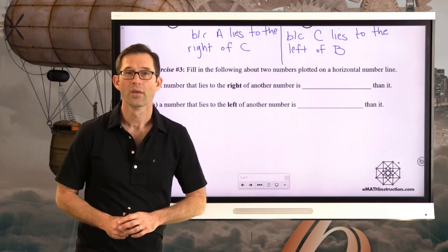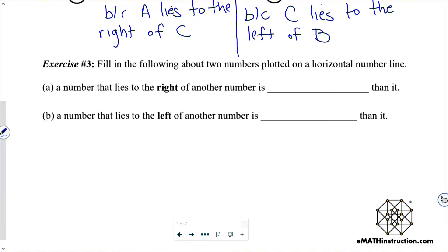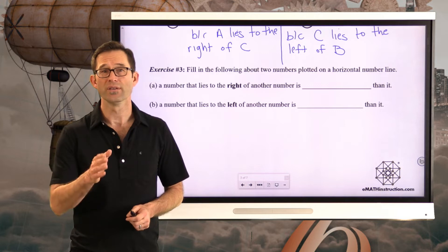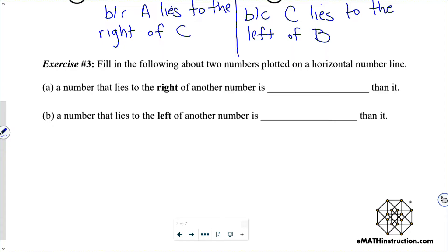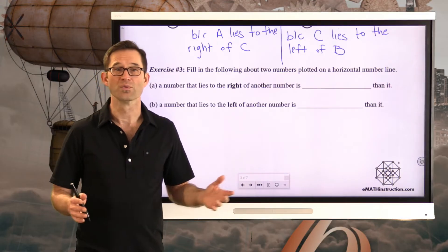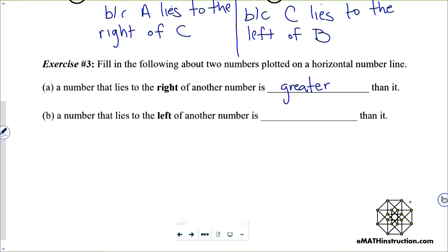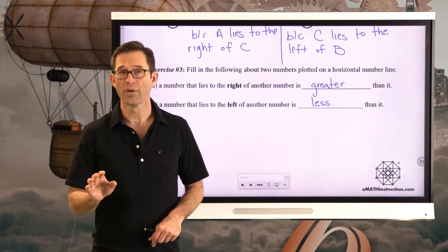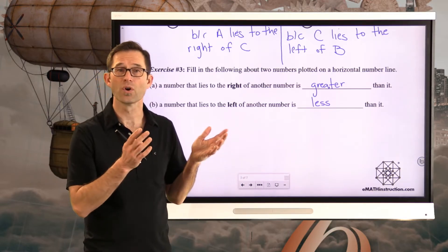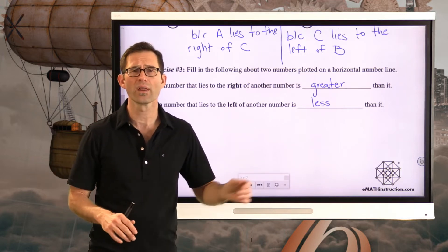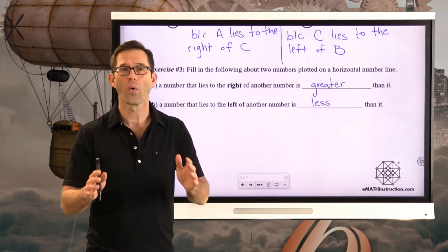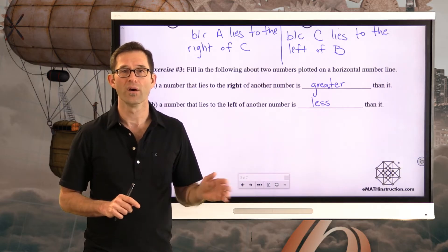Exercise 3: fill in the following about two numbers plotted on a horizontal number line. A number that lies to the right of another number is greater than it. A number that lies to the left of another number is less than it. No matter what happens with numbers and plotting, this is what you can always go back to. If you're ever wondering whether a number is greater than or less than another, ask which one would lie to the right on a standard horizontal number line.